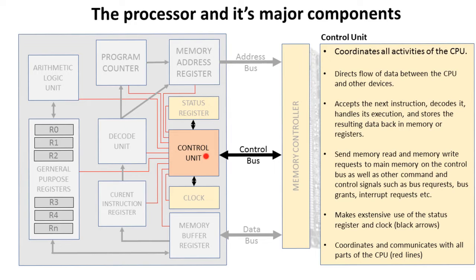The control unit is responsible for sending memory read and write requests to main memory on the control bus, as well as other command and control signals such as bus requests, bus grants, and interrupt requests. It makes extensive use of and regularly communicates with the status register and the internal clock — shown by the solid black arrows — and it coordinates with all parts of the CPU, hence all the finer red lines.